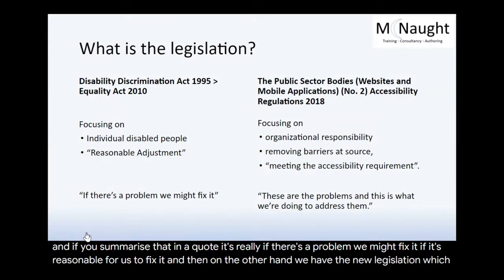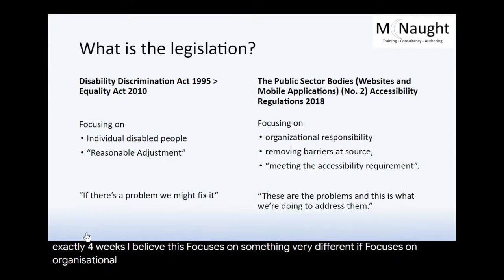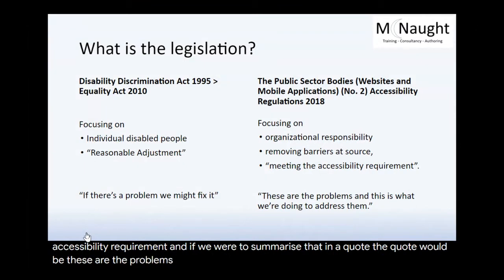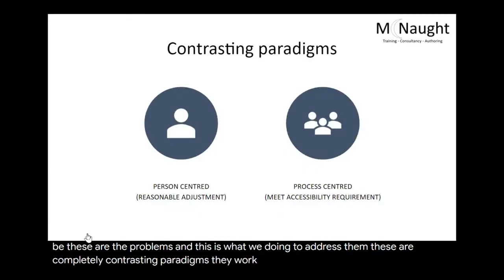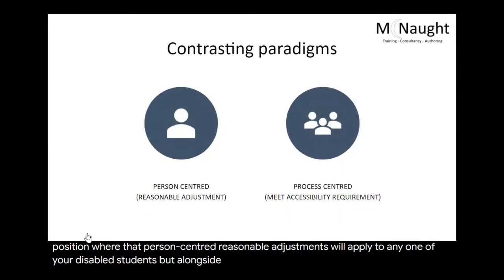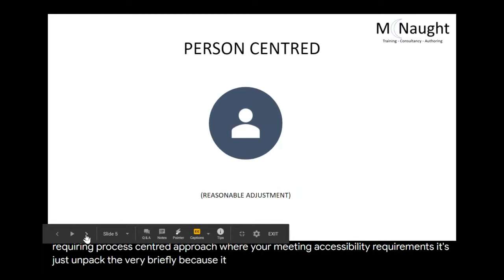On the other hand, we have the new legislation which a lot of people are very exercised about at the minute. We've got to September the 23rd, exactly four weeks. And this focuses on something very different. It focuses on organisational responsibility, removing barriers at source, meeting a so-called accessibility requirement. And if we were to summarise that in a quote: these are the problems and this is what we're doing to address them. These are completely contrasting paradigms. They work in parallel, so your students will still be in a position where that person-centred reasonable adjustment will apply to any one of your disabled students.